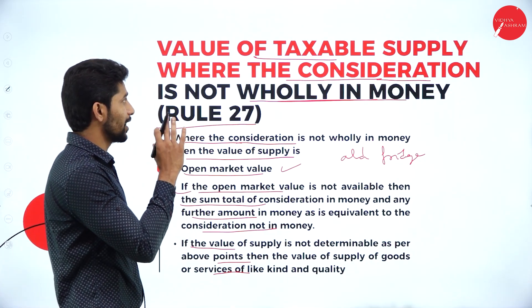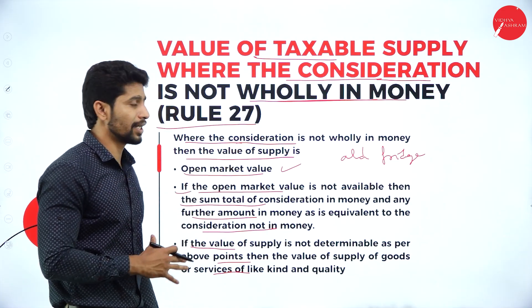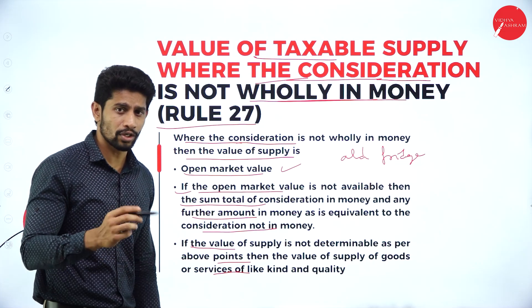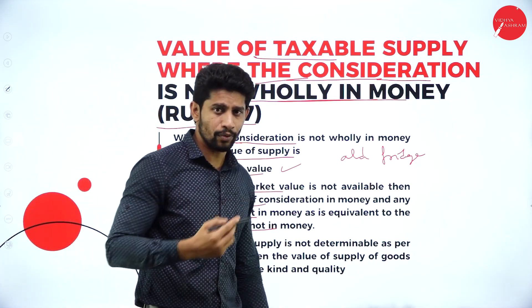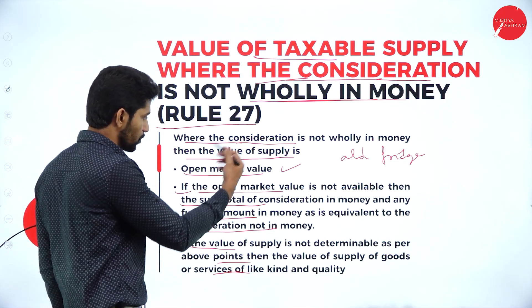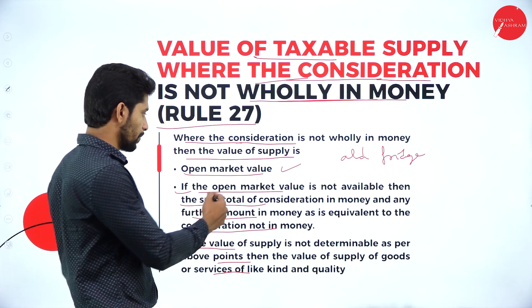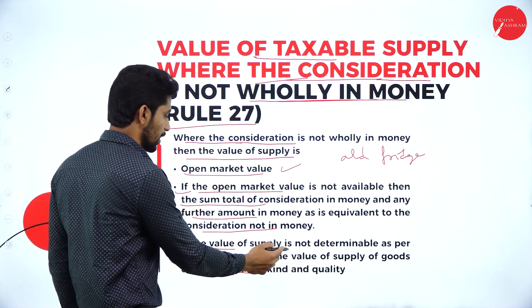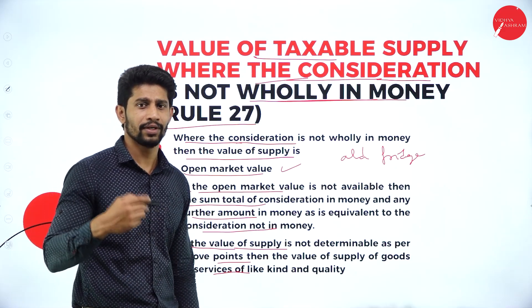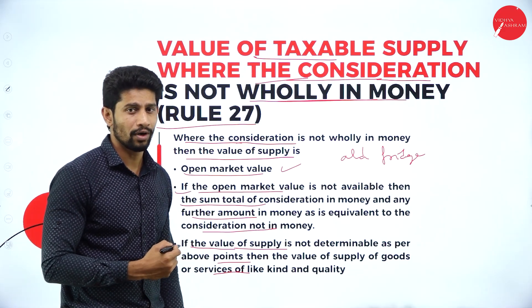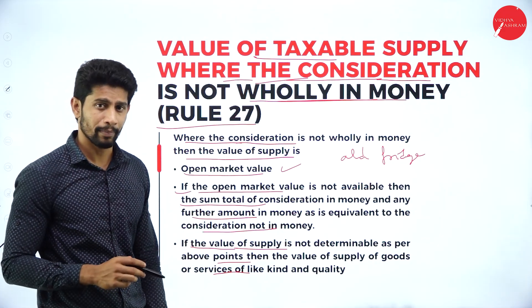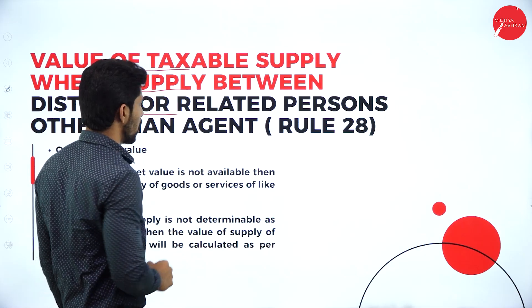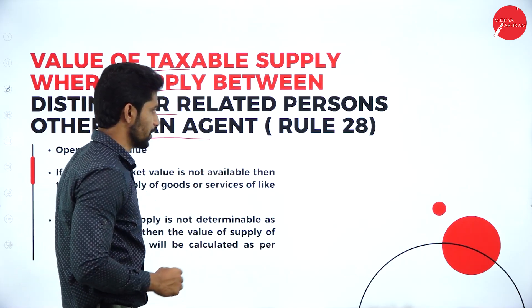In cases where the value of taxable supply is not determinable and the transaction is not fully in money, we consider these three options: the open market value, or the sum of the cash amount plus the exchange value, or the price of a like kind and quality product. Whichever is available, we take that as the value of supply where consideration is not only in money.